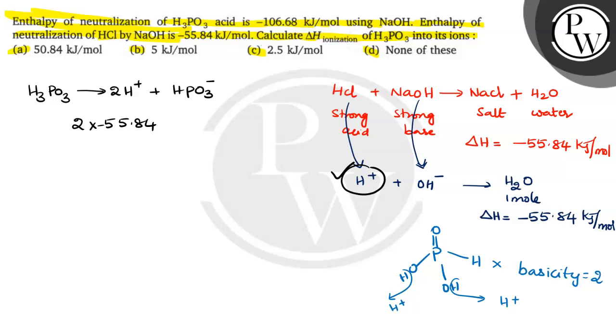So, that is equal to minus 111.68 kilojoules. But here 2 moles of H plus ion. Therefore, we need to get what is the delta H of this reaction? This is the question we have.